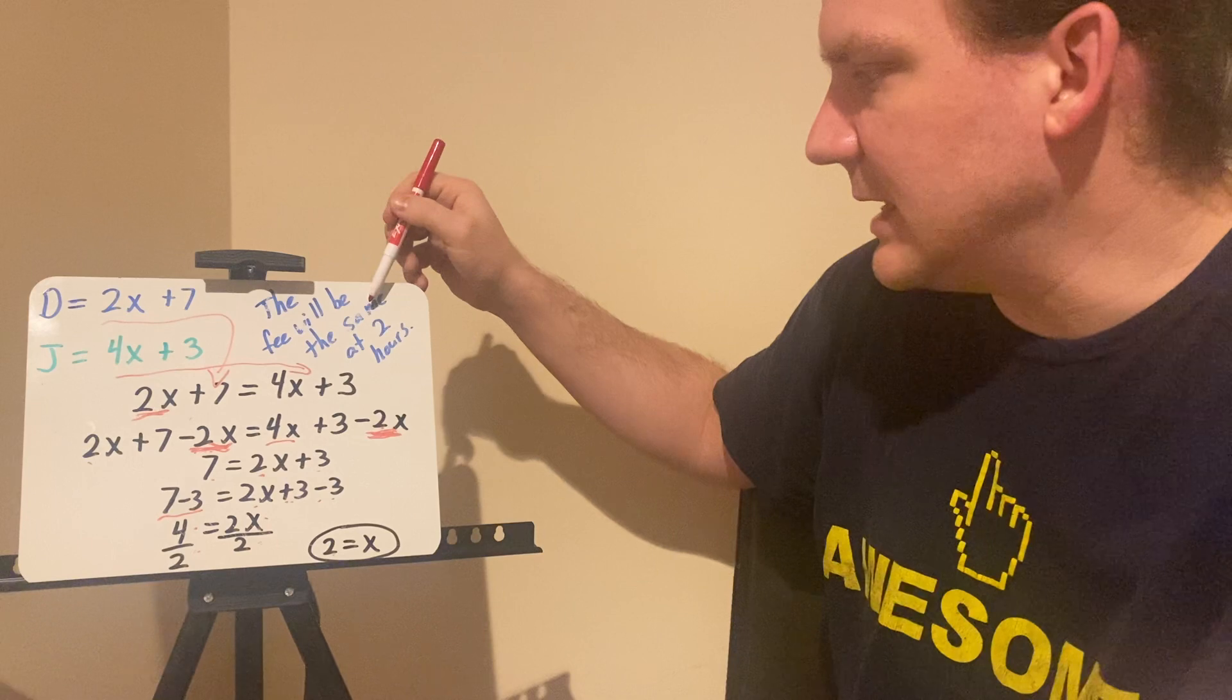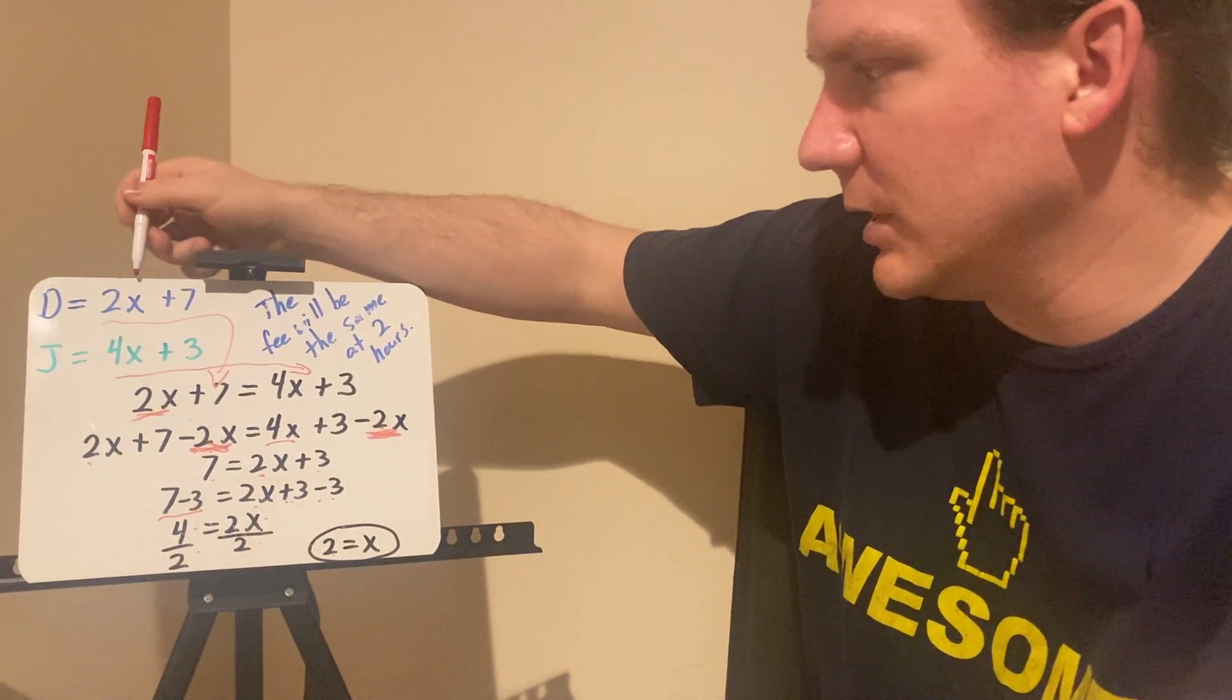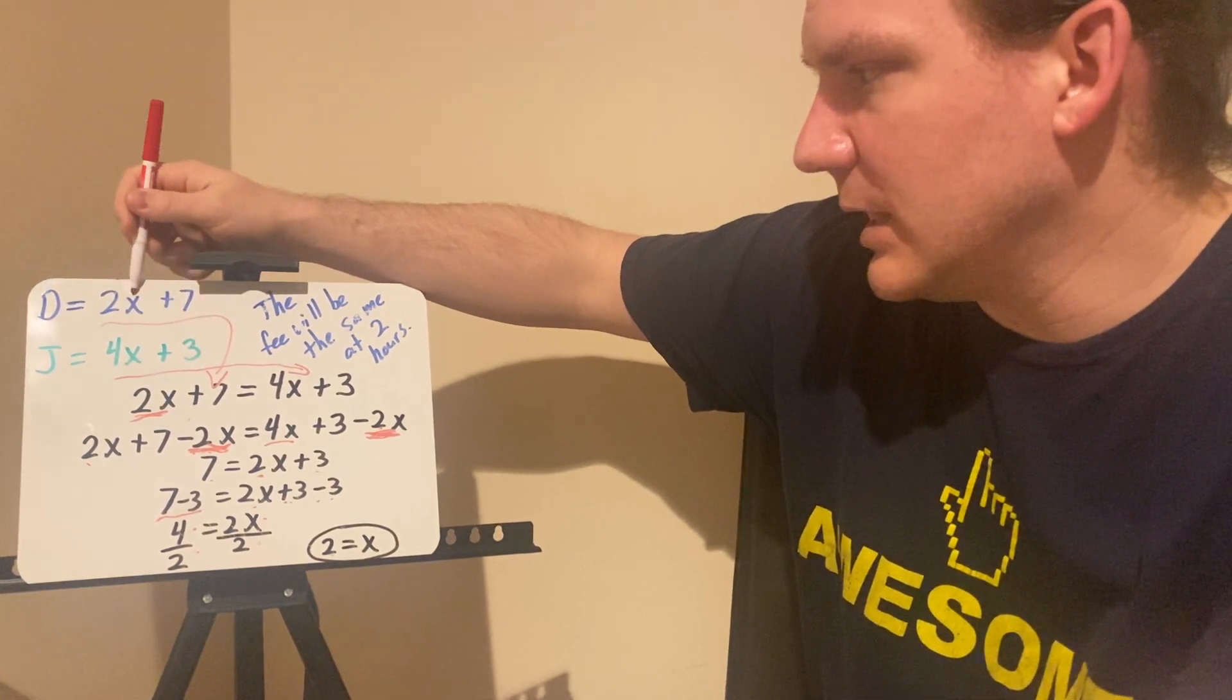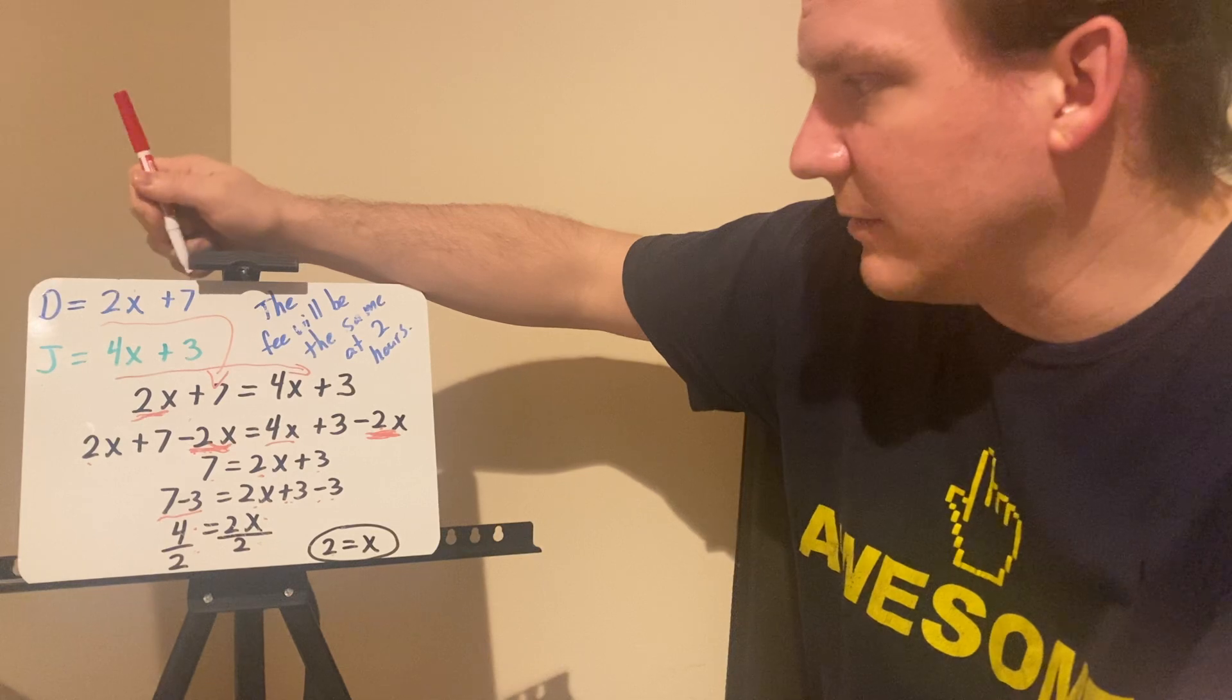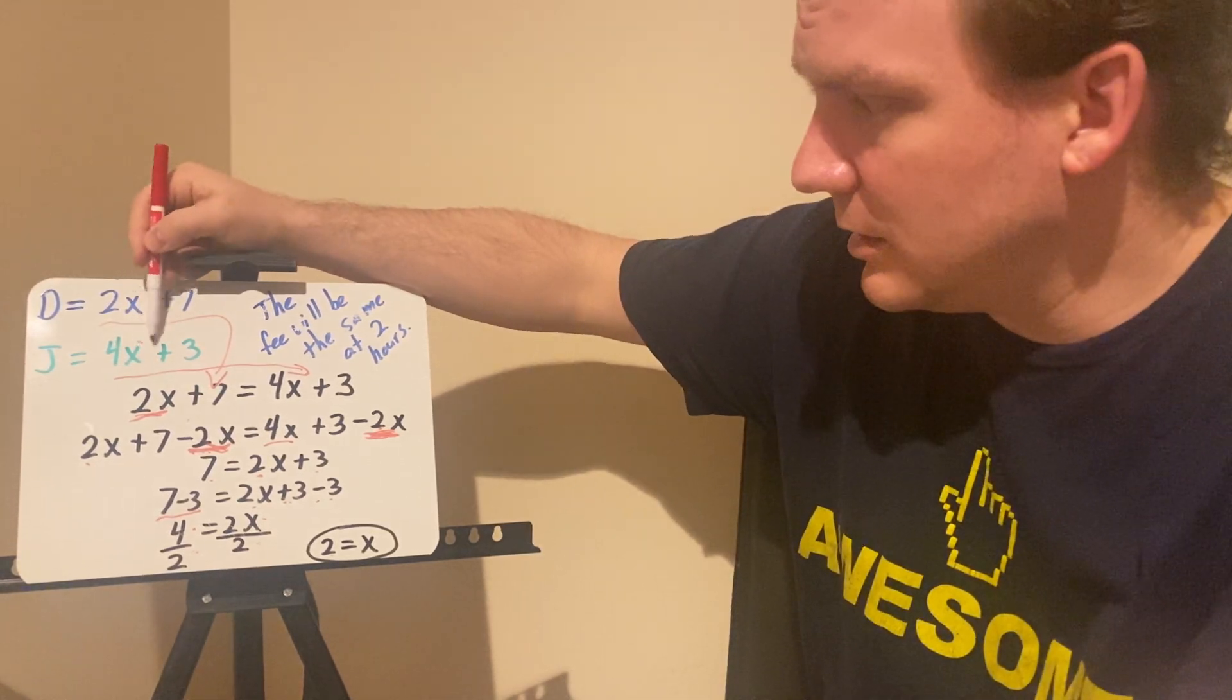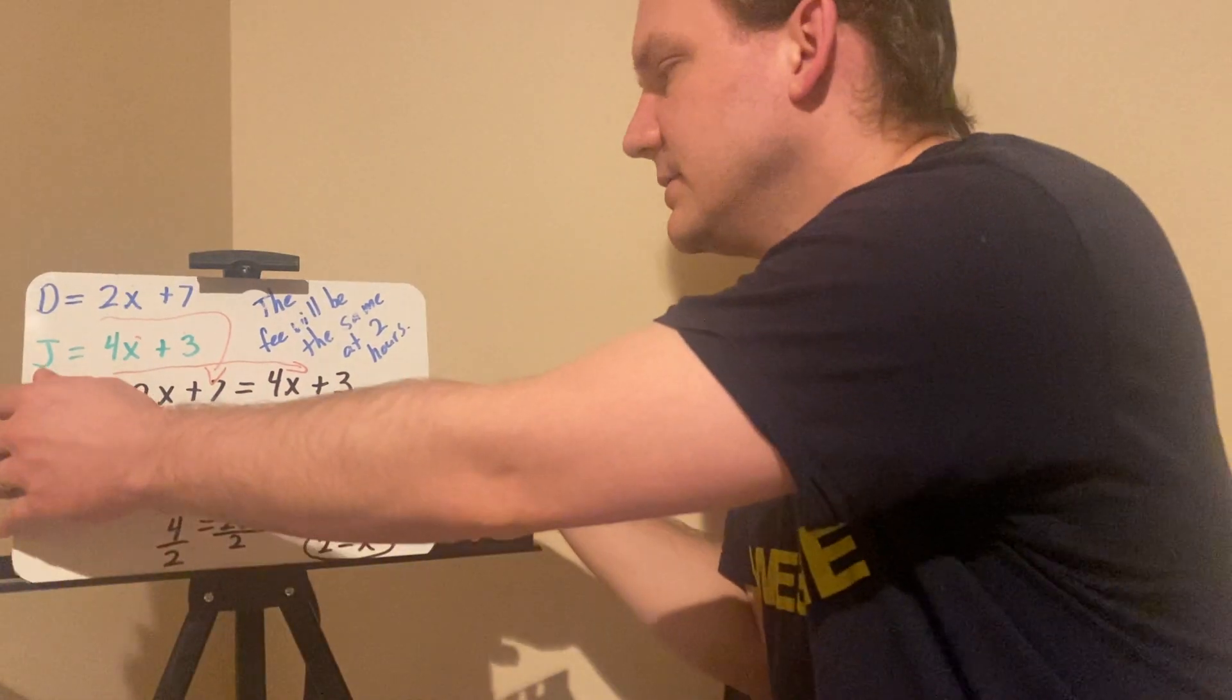The fee will be the same at 2 hours. You could figure out what that fee is by simply plugging that into one or both equations. So x equals 2. Two times two is four plus seven equals 11. Four times two is eight plus three equals 11. So they both would equal $11 after 2 hours.